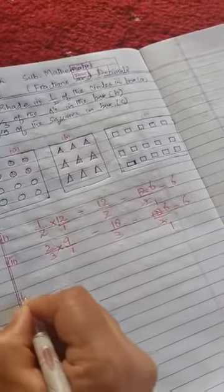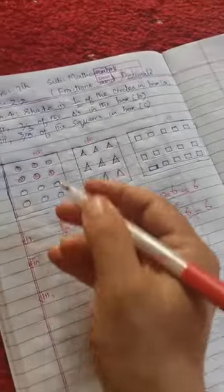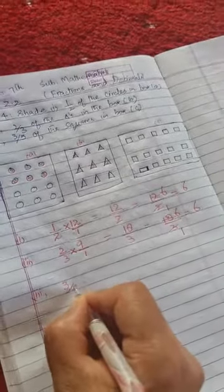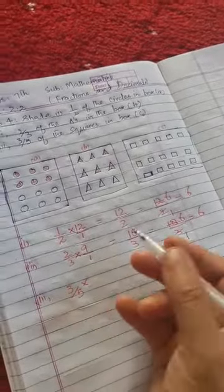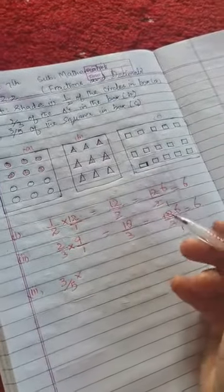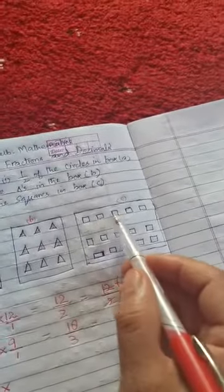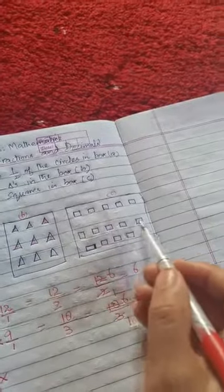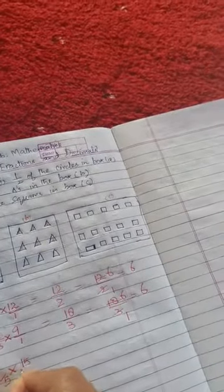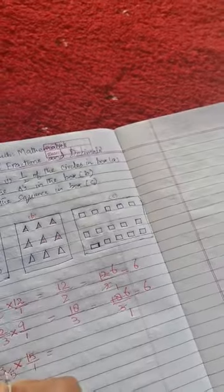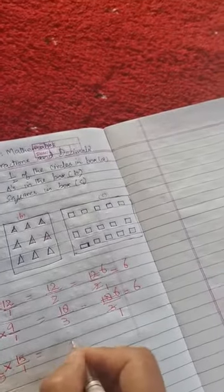Third part: three-fifths of the squares in box C. Count the squares in box C: one, two, three, four, five... There are fifteen squares. Three-fifths multiplied by fifteen.